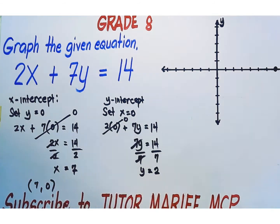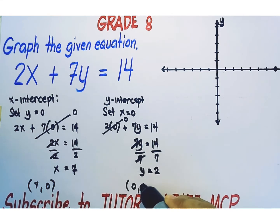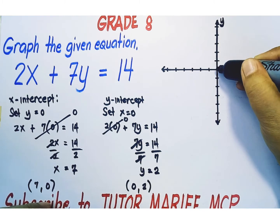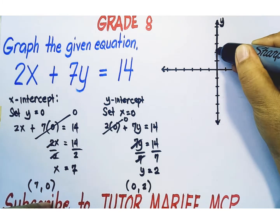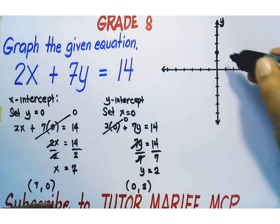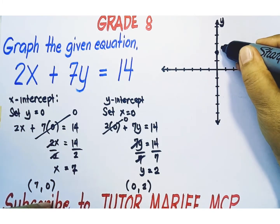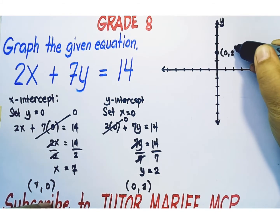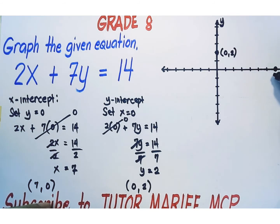The x-coordinate of the y-intercept is zero, so our second point is at (0, 2). Let's plot this point — counting up the y-axis: zero, one, two. The coordinates of this point are (0, 2) and the coordinates of the first point are (7, 0).